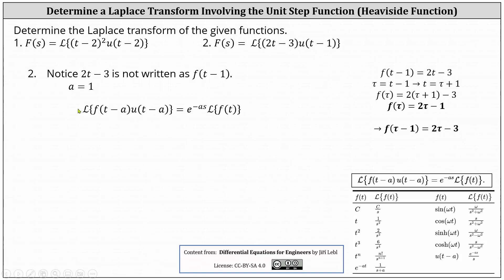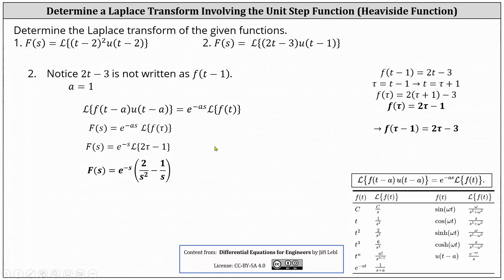This indicates the Laplace transform equals e to the power of negative a·s times the Laplace transform of f of tau, where a equals one and f of tau equals two tau minus one. This gives us the Laplace transform equals e to the power of negative s times the Laplace transform of two tau minus one. The Laplace transform of two tau equals two times one over s squared, minus the Laplace transform of one, which is one divided by s. Therefore, big F of s equals e to the negative s times the difference of two divided by s squared and one divided by s.